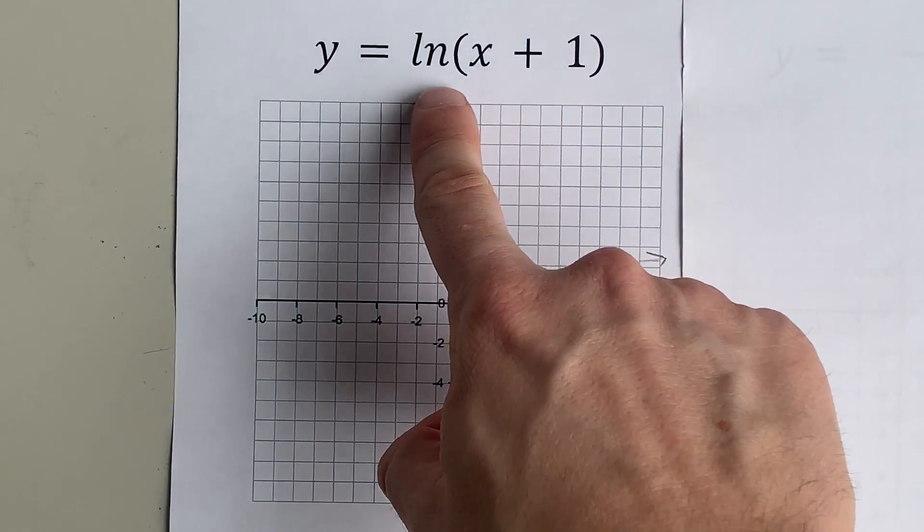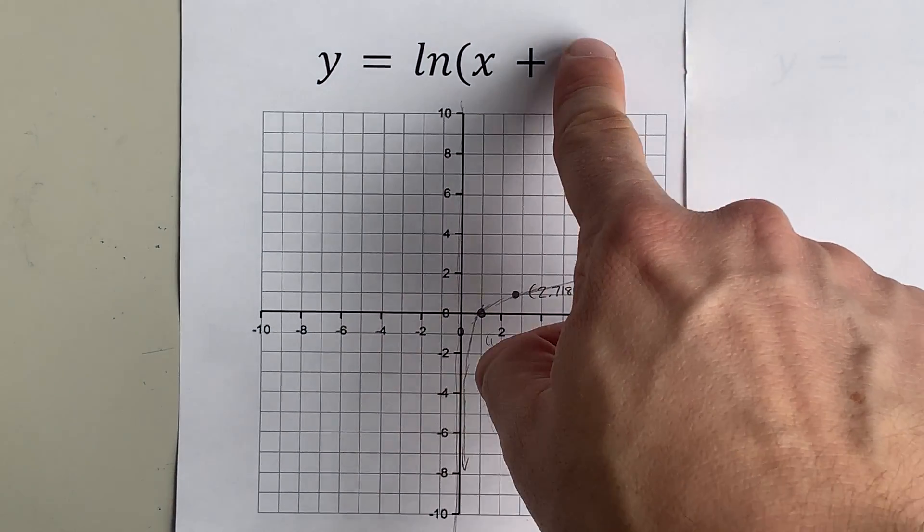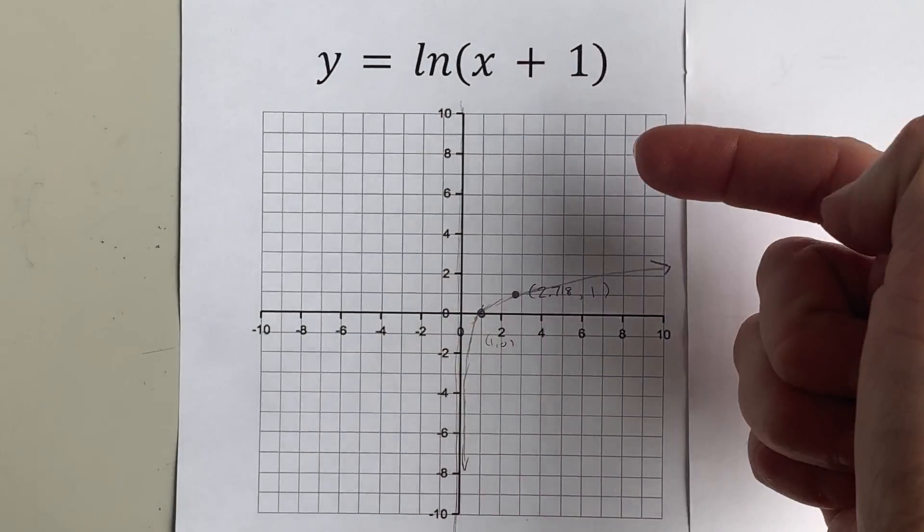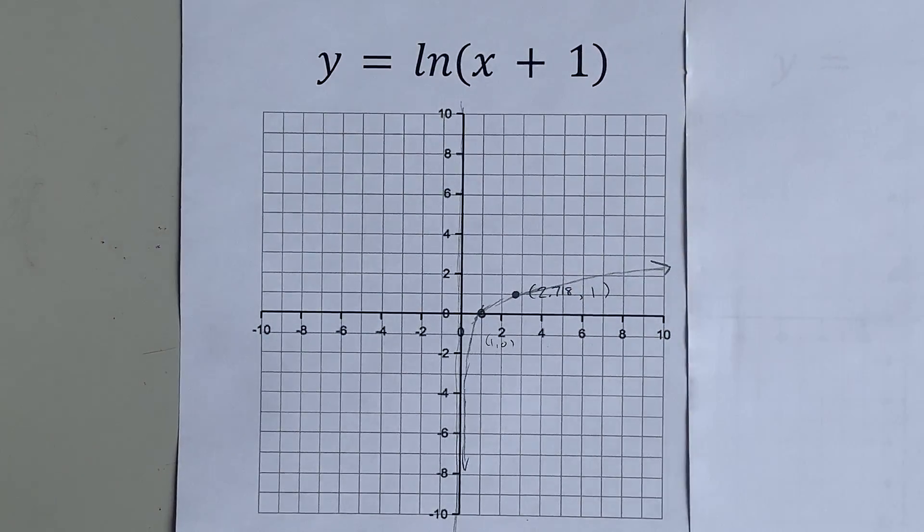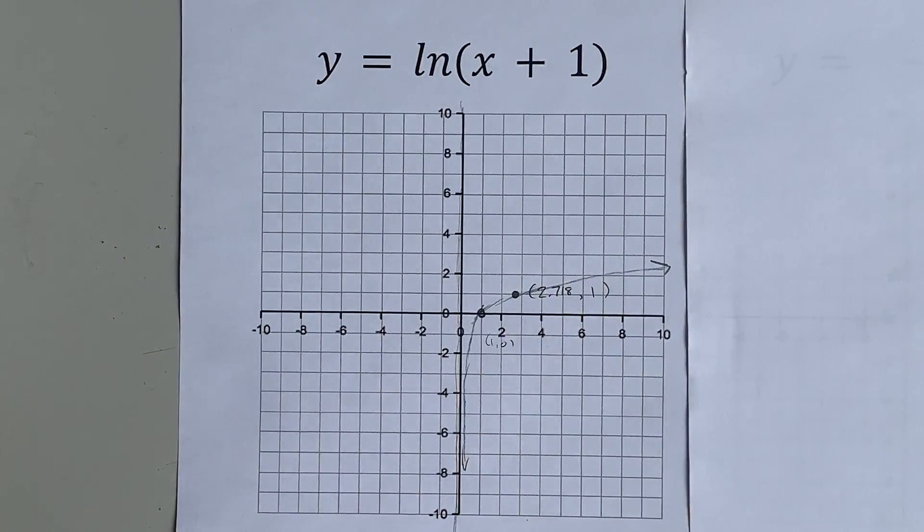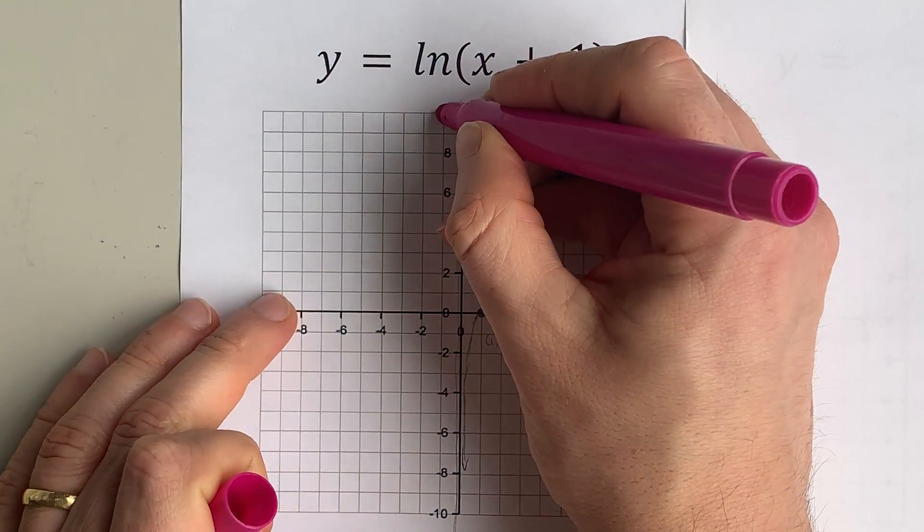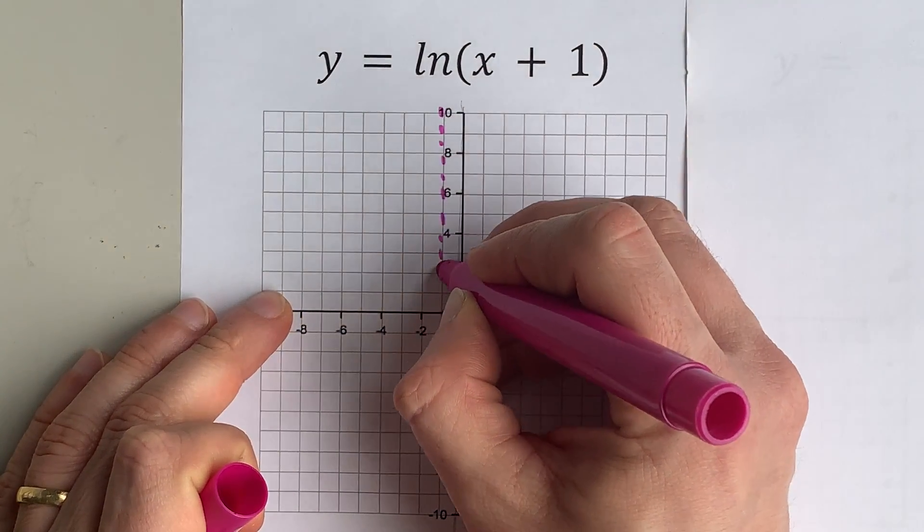But this graph is x plus 1. This is a horizontal translation 1 to the left, which means the vertical asymptote is here at negative 1 instead.